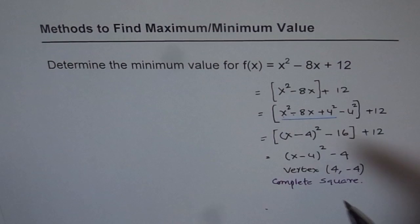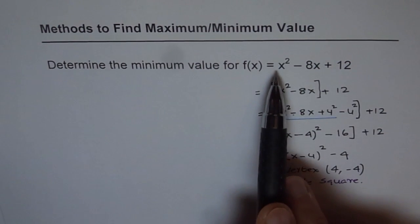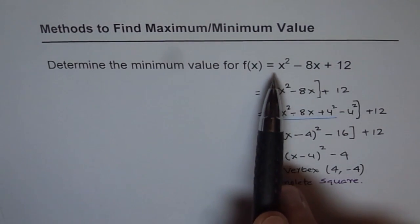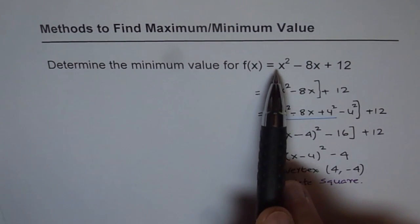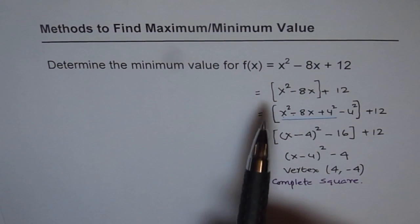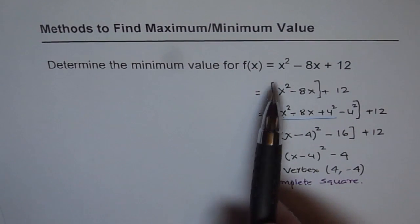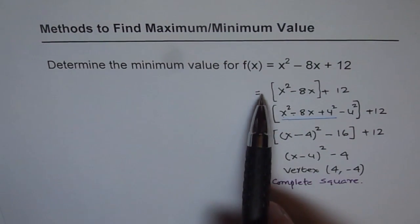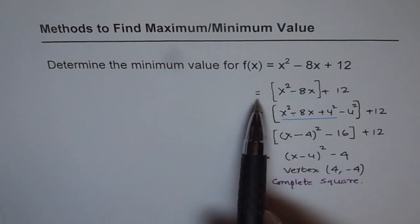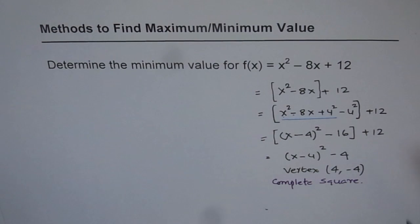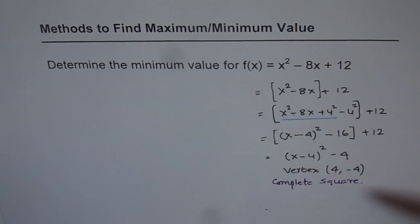This was simpler since the coefficient of x squared was 1. If it had been some other number, in the first step we would have factored that out. So as a very simple example, I am demonstrating here different methods. We will look into more completing the squares details in coming videos.